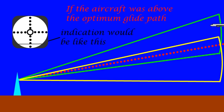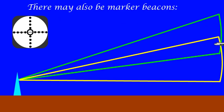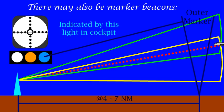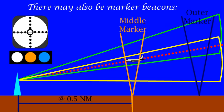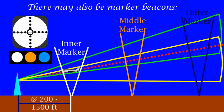There may also be marker beacons, such as the outer marker indicated by a blue light in the cockpit. A middle marker indicated by an orange light. And an inner marker indicated by a white light in the cockpit.